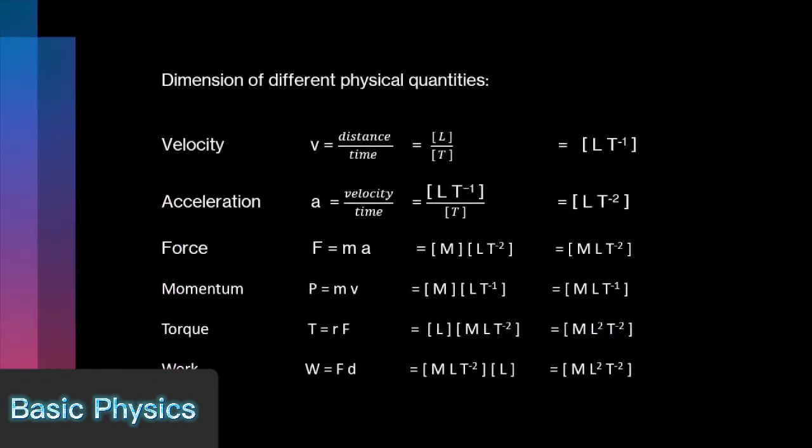Dimensions of different physical quantities: Velocity V is equal to distance by time, and its dimension is [L T^-1]. Acceleration A is equal to velocity by time, and its dimension is [L T^-2].